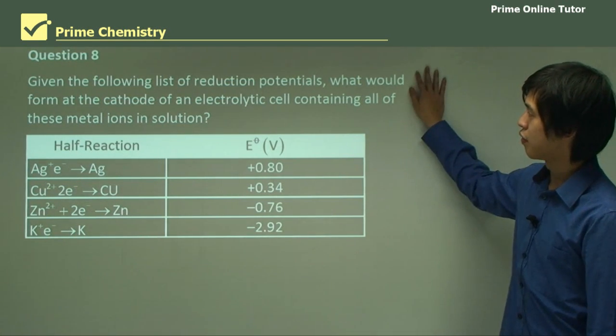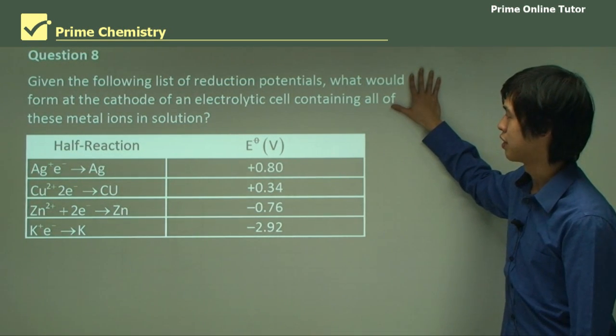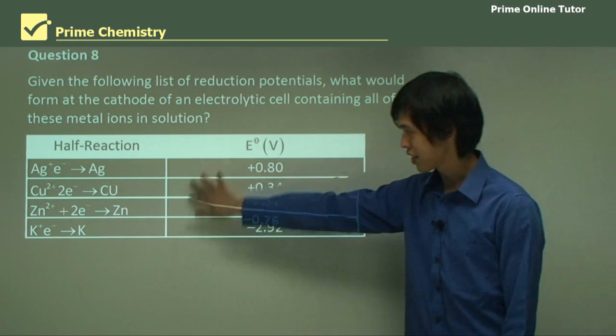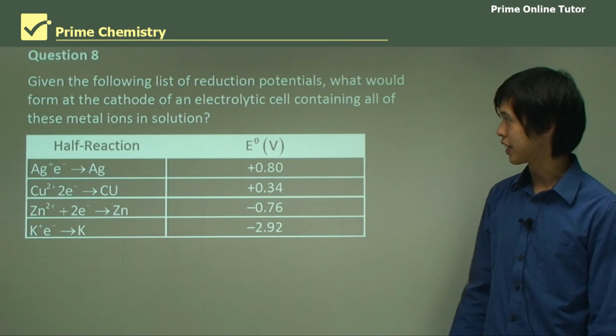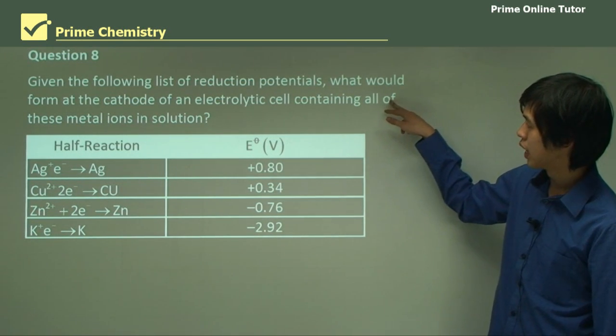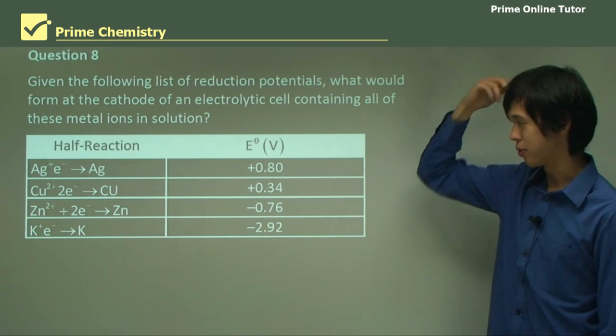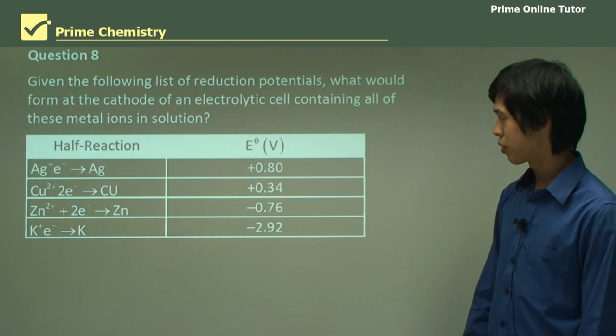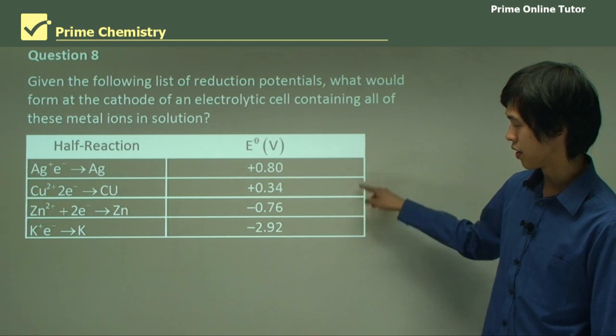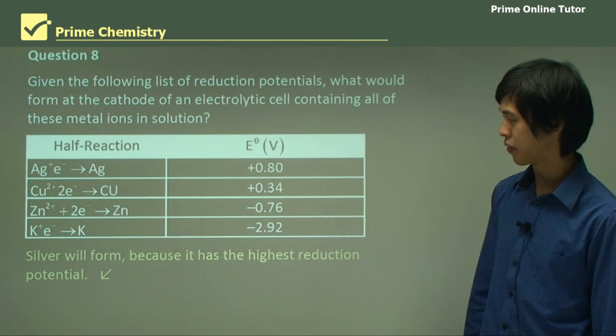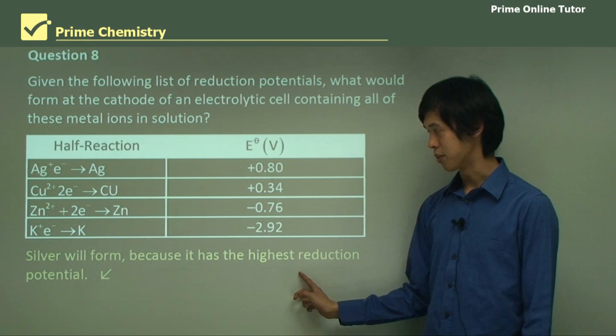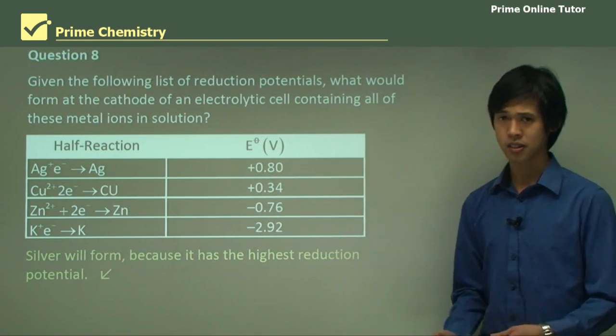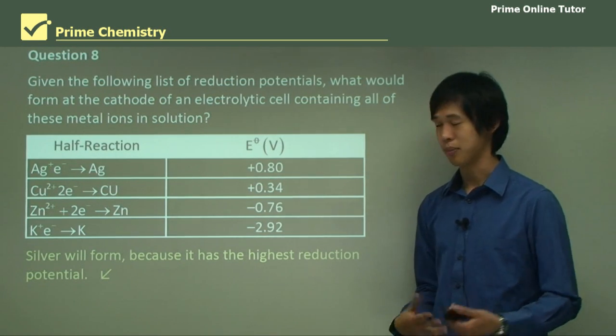Given the list of reduction potentials, what would form at the cathode of an electrolytic cell containing all of these metal ions in solution? So which one's likely to form at the cathode? We want to see reduction happen. So we will most likely see the one with the biggest number. So it's more likely to be A, the first one, silver, because it has the highest reduction potential. You can see it's got the biggest number, biggest positive number. So it's the one that's most likely to form as a pure metal.